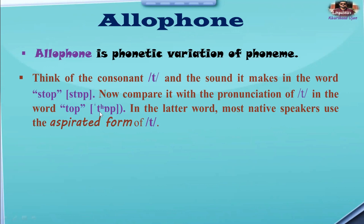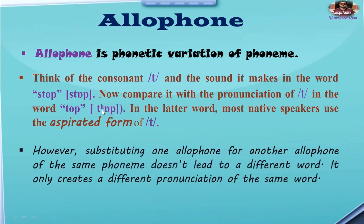This variation is known as allophone. However, substituting one allophone for another allophone of the same phoneme doesn't lead to a different word — it only creates a different pronunciation of the same word. The variation of the same phoneme, when pronounced differently, is not a difference in words but a difference in pronunciation.